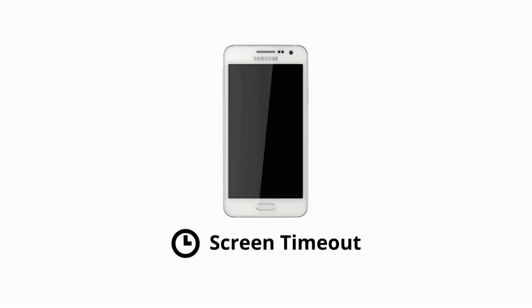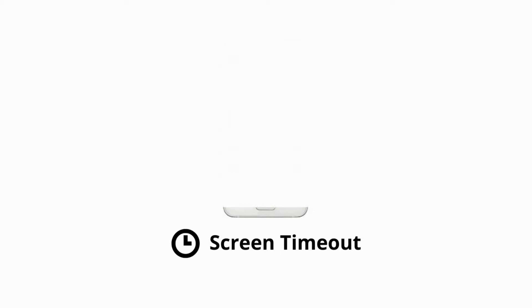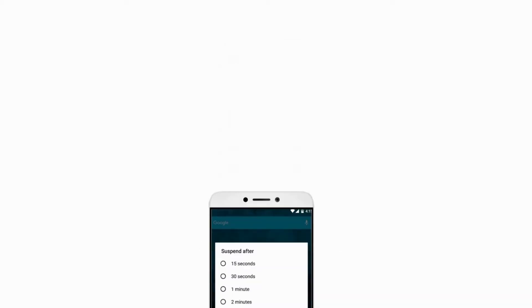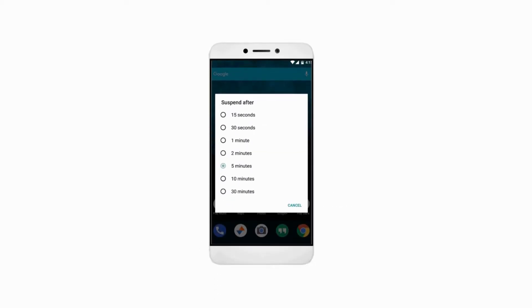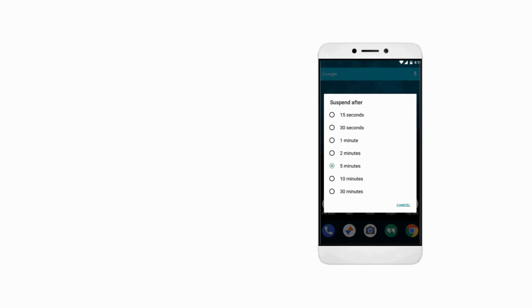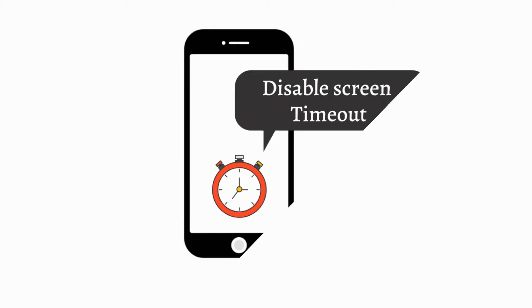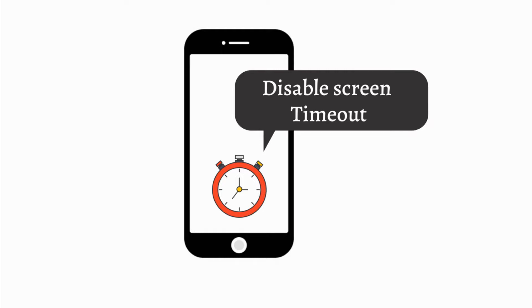There are times when you don't want your phone screen to automatically turn off after a few minutes. On Android phones, the most you can keep the screen on is 30 minutes. So, this video is about how to disable screen timeout and prevent your Android phone from going to sleep.